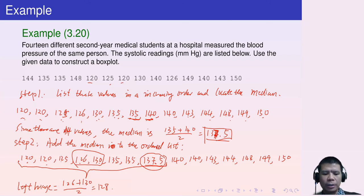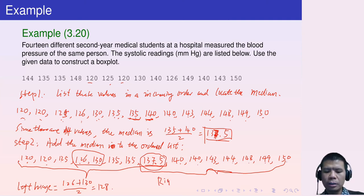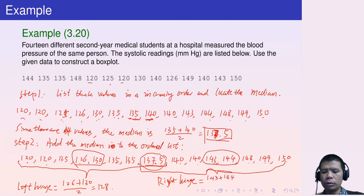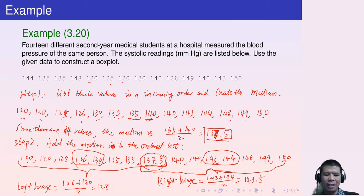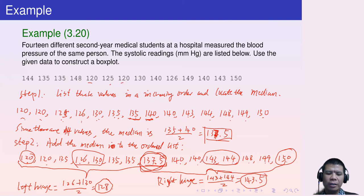Similarly, we mark off the upper half including 137.5 — again eight values. The right hinge equals the average of the middle two: 143 plus 144 over 2, which is 143.5. So we now have all five numbers: minimum 120, left hinge 128, median 137.5, right hinge 143.5, and maximum 150.